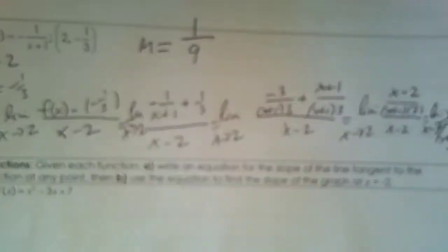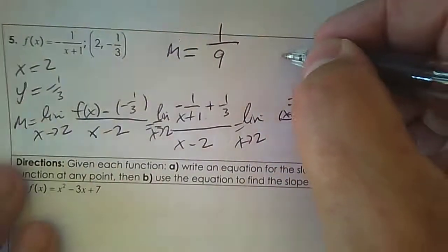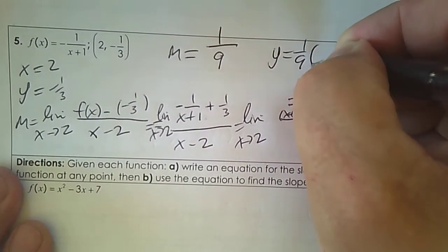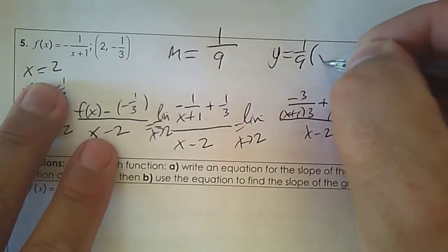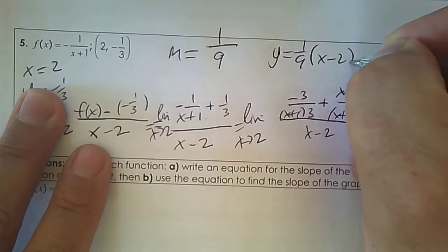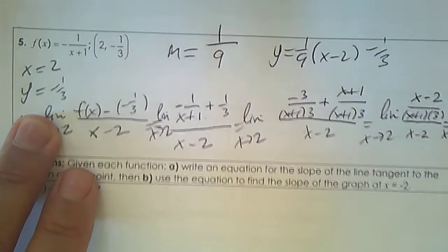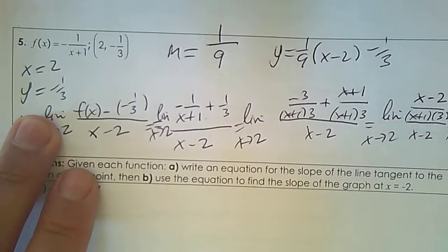Now putting it all together: y equals 1 ninth times (x minus 2) subtract 1 third. Done.